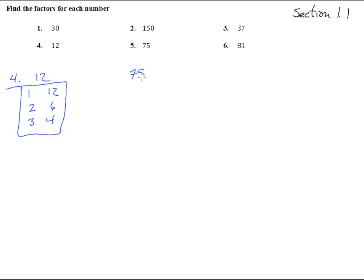Number 5: 75. That's 1 and 75. Does 2 go into that? No, it's not an even number. But 3 goes into it 25 times. 4? No. 5 goes into it — how many times does 5 go into 75? Looks like about 15. 6? Nope. 7? Nope. I think we're good.